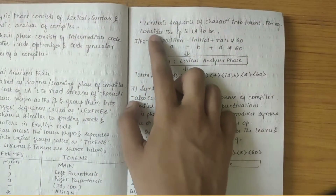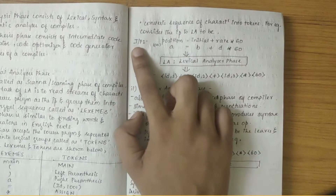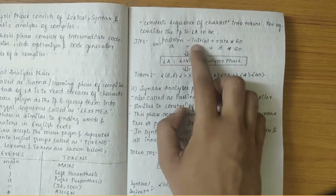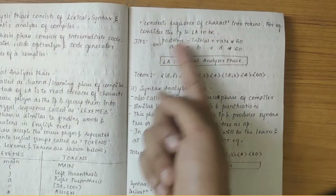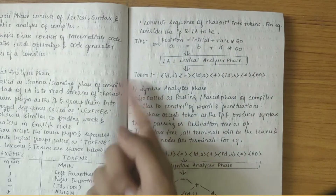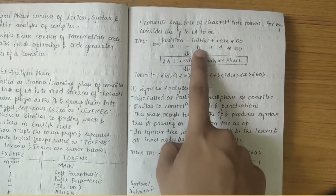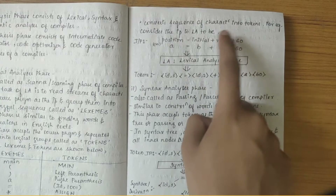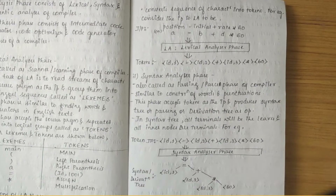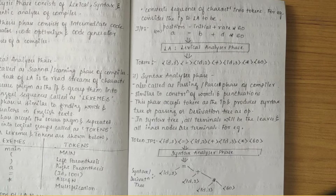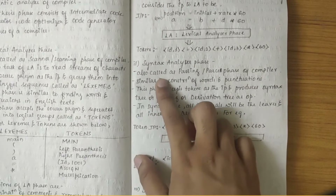Another function is to convert a sequence of characters into tokens. Consider the input: position equals a equals b plus d star 60. This input is given to the lexical analyzer and we get the tokens — 'a' is given a unique ID, equals is written as-is, 'b' is given a unique ID, 'd' is given a unique ID, and all operators are written as-is. The major function of the lexical analyzer is to convert characters to tokens.